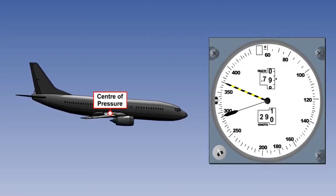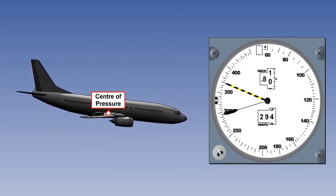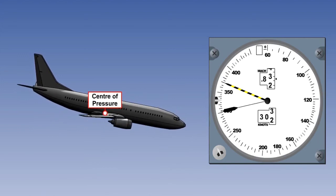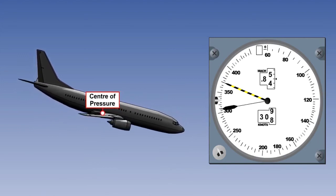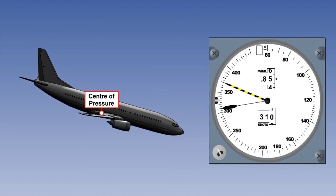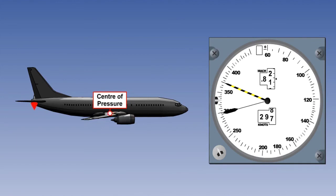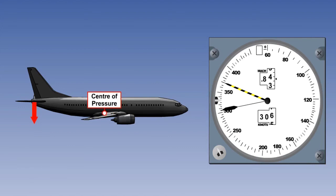Aircraft that fly at high subsonic or transonic speeds may suffer from Mach tuck or tuck under. This is a nose-down pitching moment caused by the rearward movement of the centre of pressure at those speeds. A Mach trim system is provided to counteract Mach tuck. It is independent of the autopilot and is switched on for the whole flight, but will only have an input into the controls to counter Mach tuck when the aircraft encounters the onset of the necessary speed range.